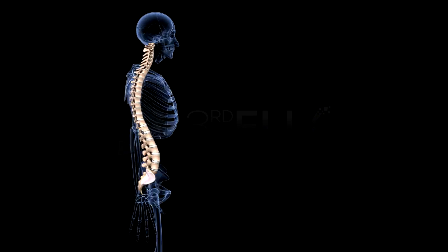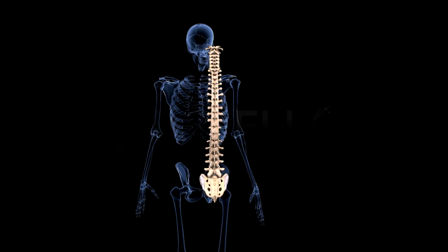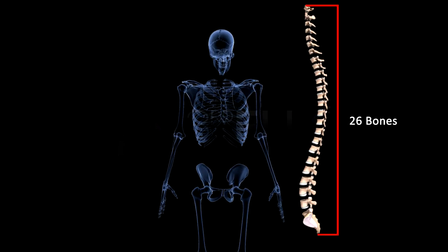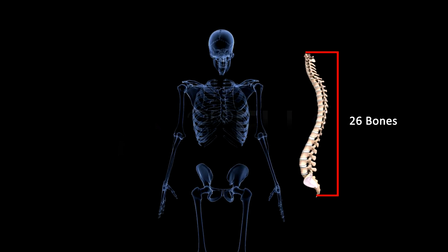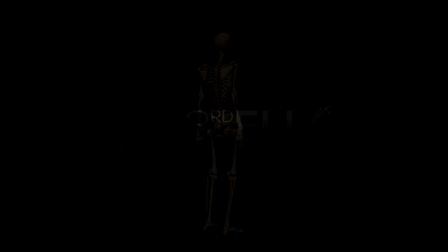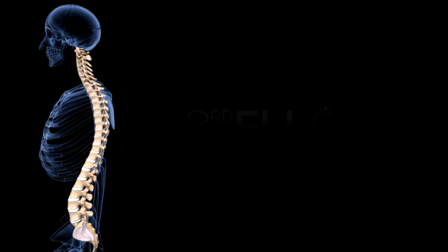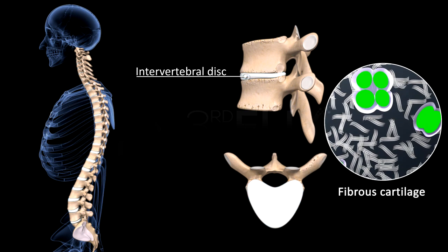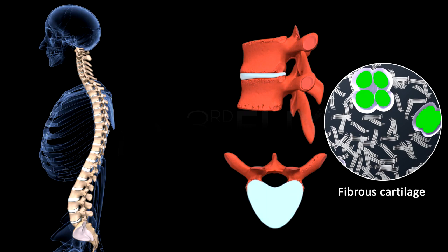In a human adult, the vertebral column is made up of 26 serially arranged bones called vertebrae. The intervertebral discs, made up of fibrous cartilage, are present between the successive vertebrae, forming the cartilaginous joints.